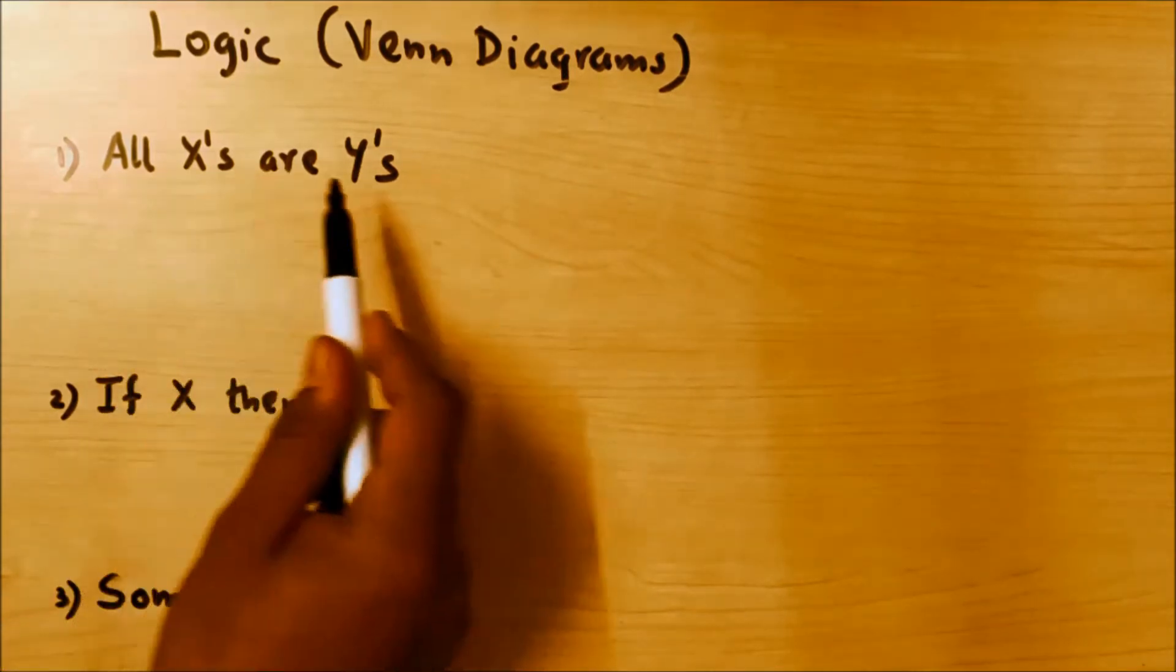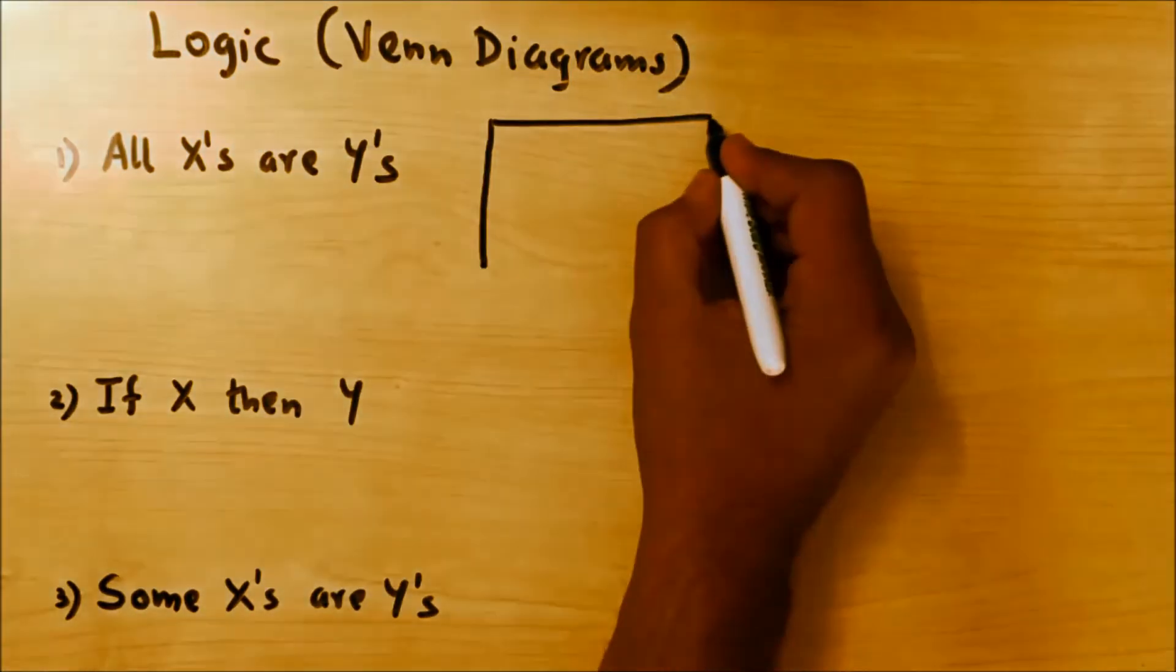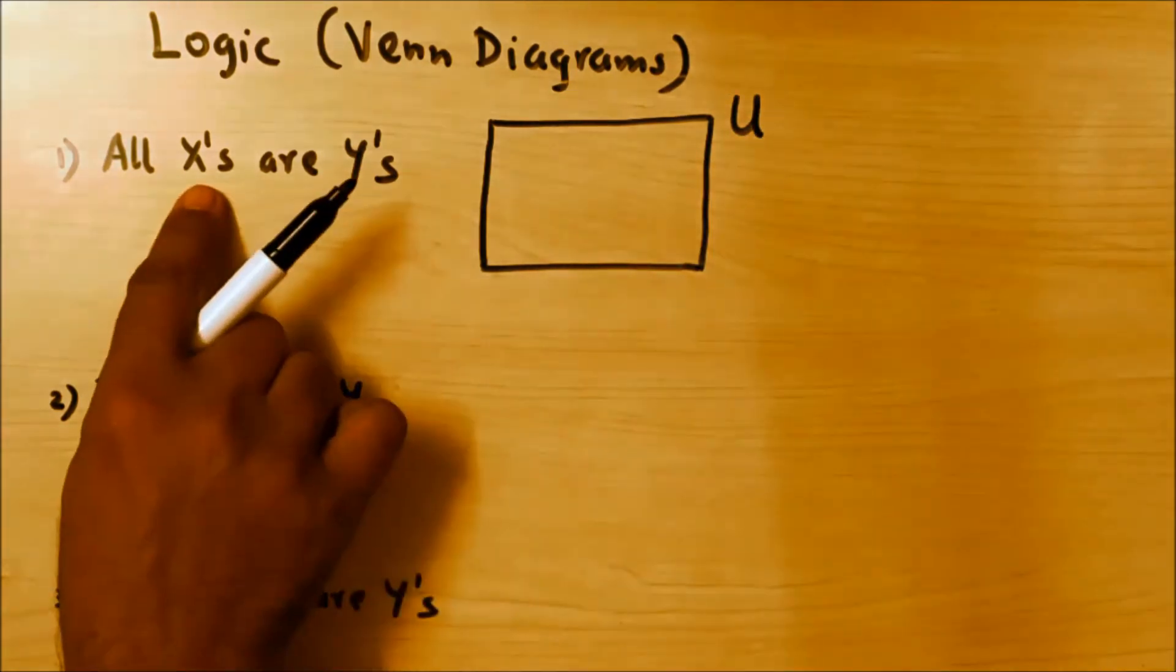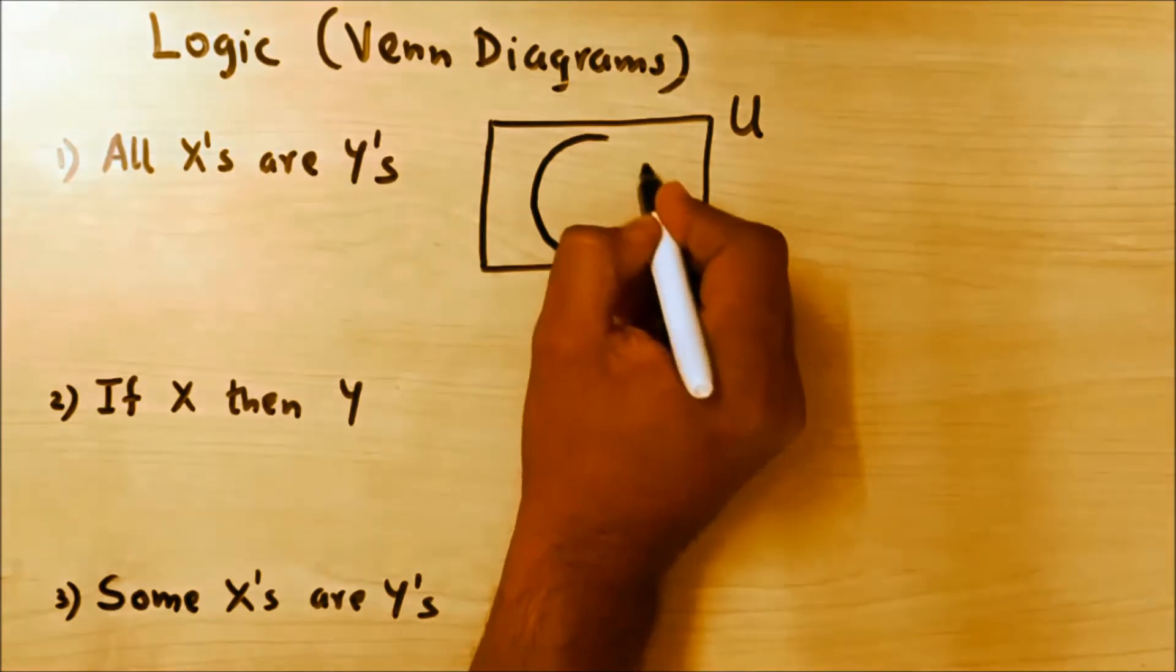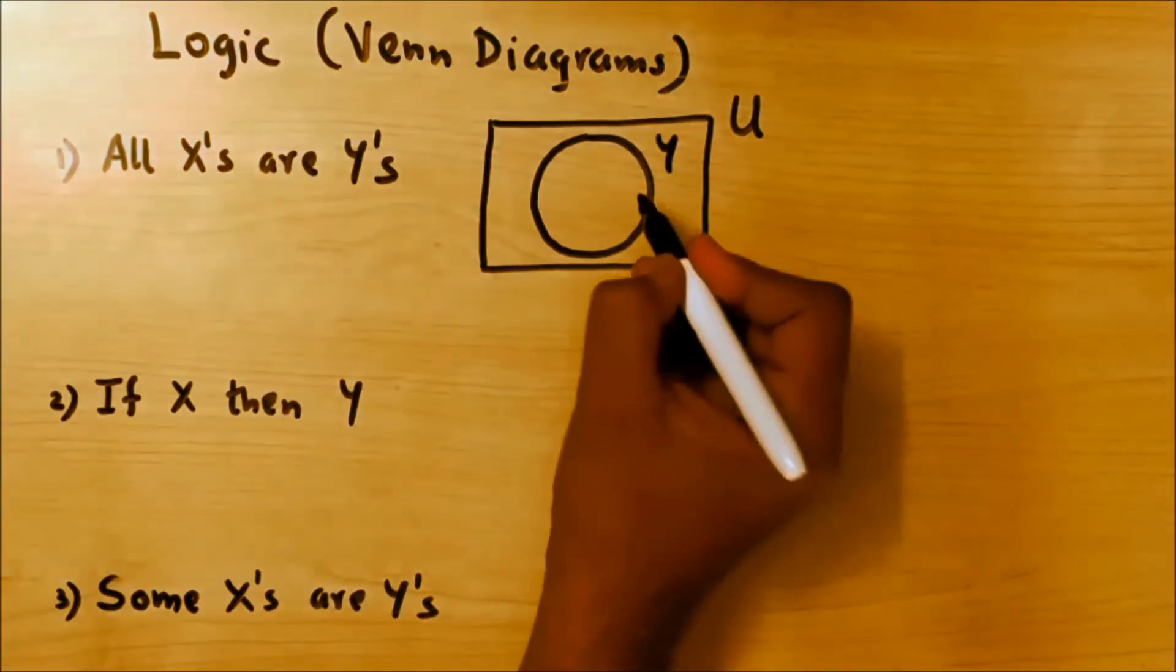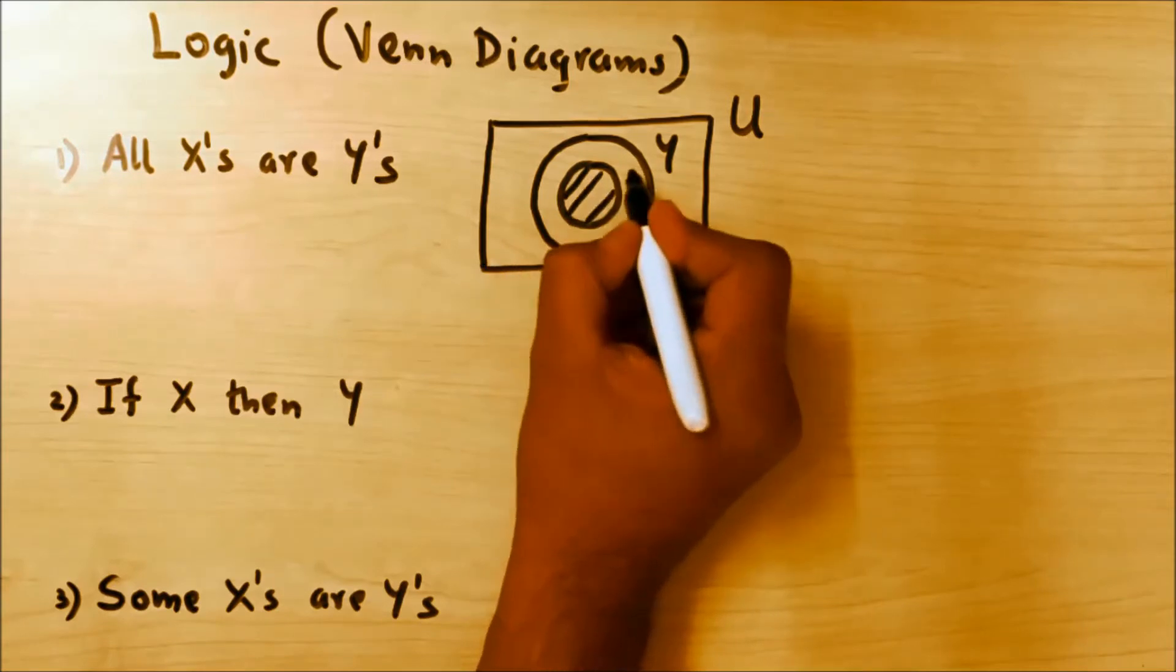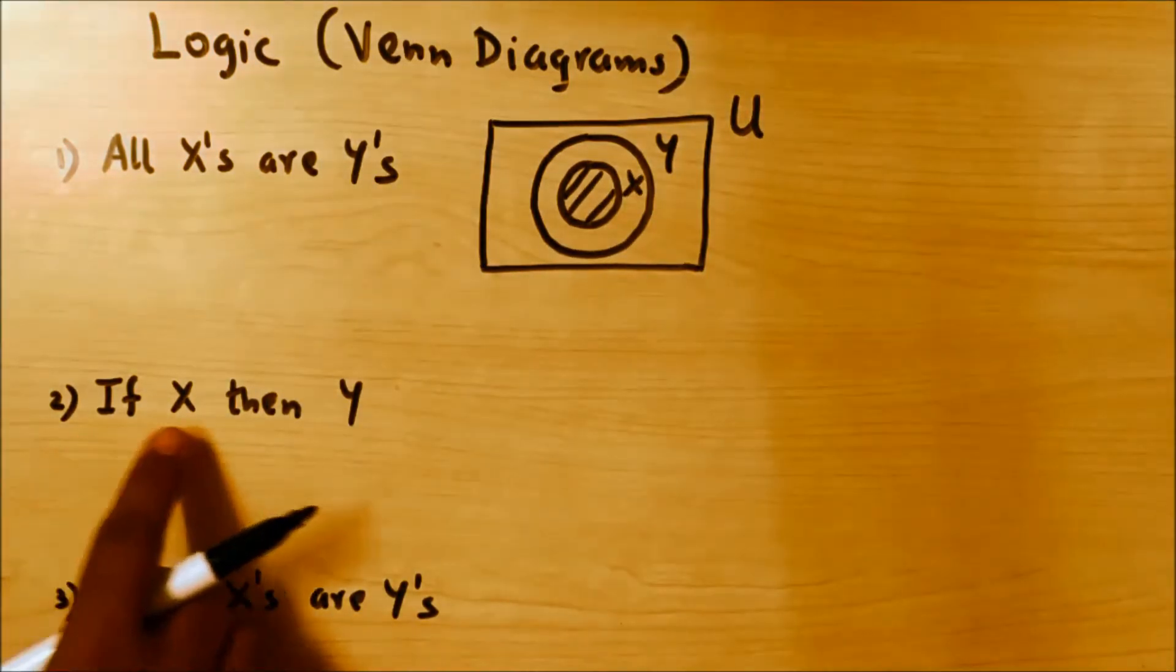First one is all X's are Y's. We draw the universal set U. All the X's are Y's, so first we draw the set Y, and all the X's must come inside. So all these X's are Y's.